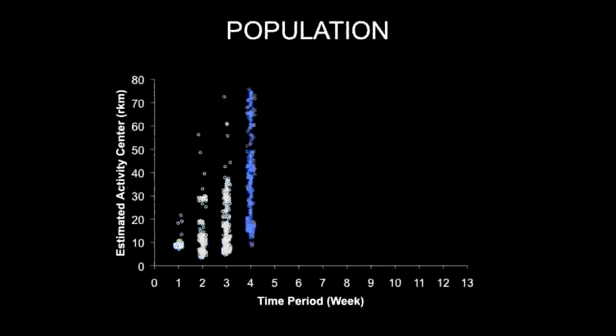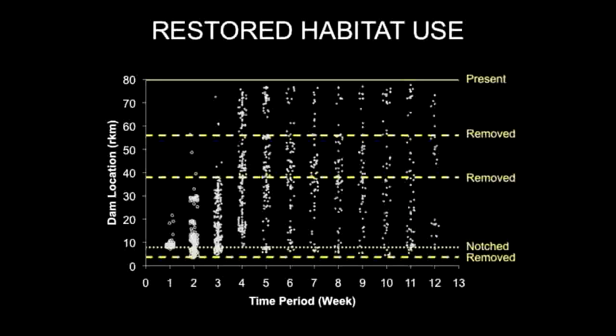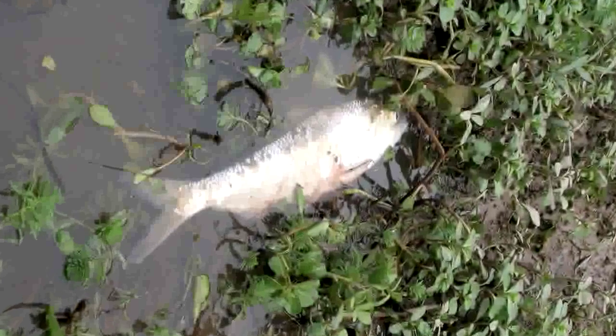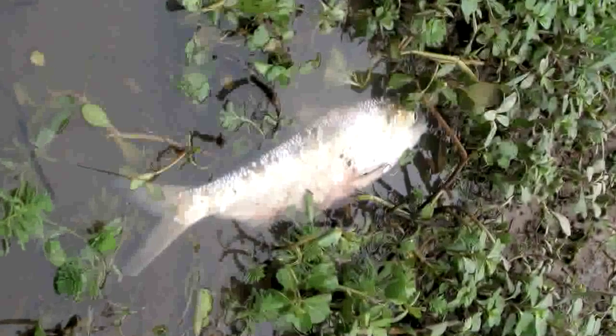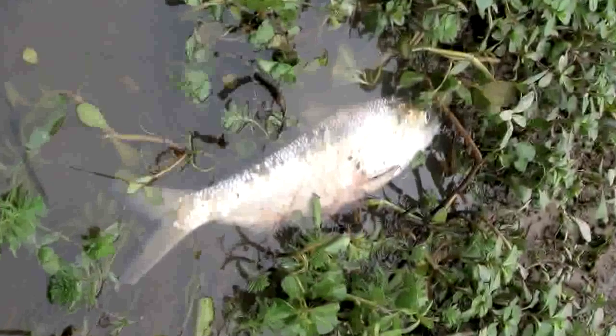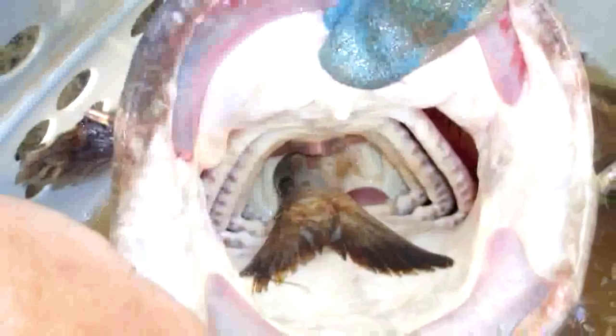Model results can also be examined at the population level. American shad used habitat restored by complete and partial dam removals and migrated more extensively during high flows. Model results indicated high spawning mortality, as the mean weekly survival probability was 0.8. Mortality was likely due to migratory and spawning stresses along with predation.